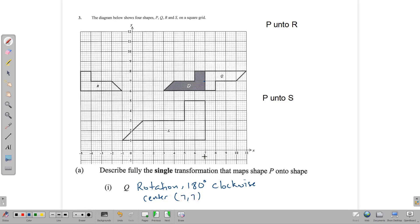So it has a center of 7, 7. The next one is to figure out how does P get onto R. Here is P, there is R. This one is a little bit easier because this looks like a reflection.